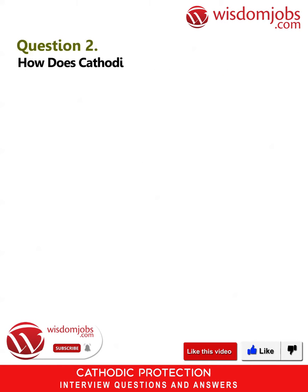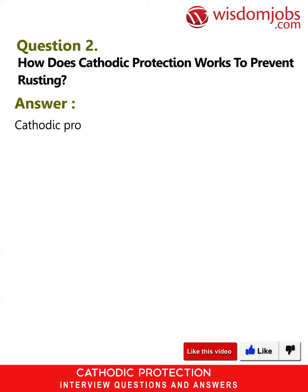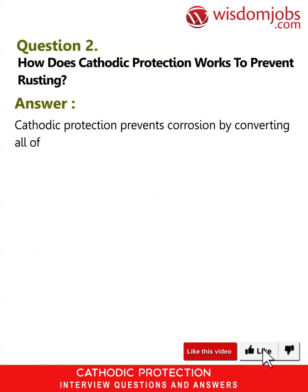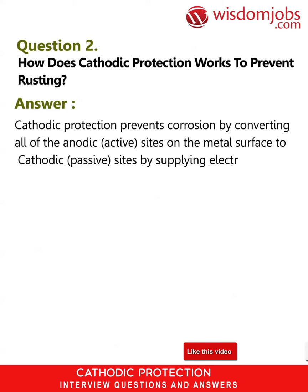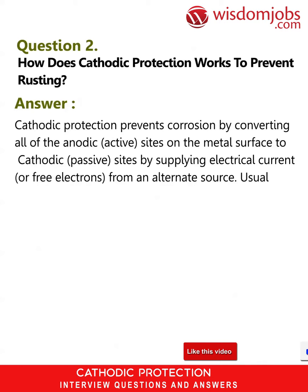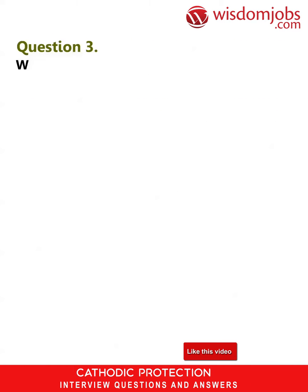Question 2: How does cathodic protection work to prevent rusting? Answer: Cathodic protection prevents corrosion by converting all of the anodic (active) sites on the metal surface to cathodic (passive) sites by supplying electrical current or free electrons from an alternate source. Usually this takes the form of galvanic anodes, which are more active than steel.